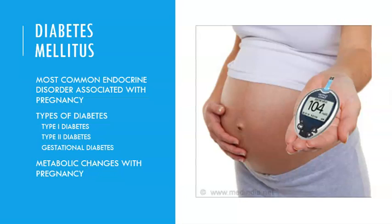Gestational diabetes is more common than most people realize, and it does go away once the mom gives birth. However, about 50% of people who develop gestational diabetes will develop type 2 diabetes within 10 years after that pregnancy. So even though it goes away after birth, it's very common for it to re-emerge as type 2 diabetes later in life.